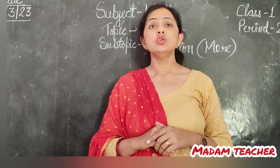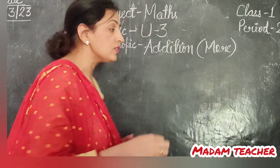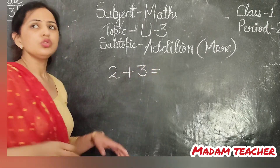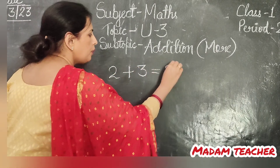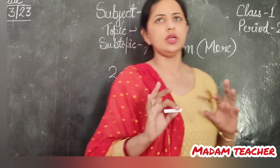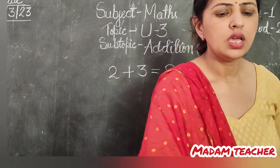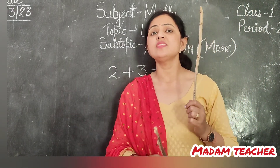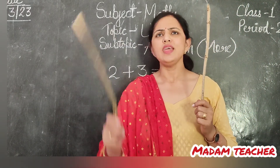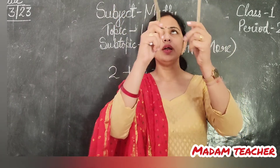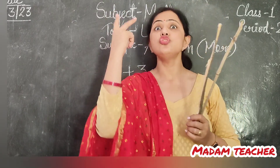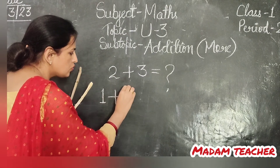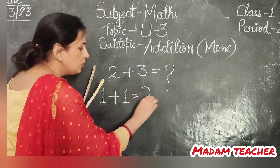My question was — Meera question tha — haap 2 mein 3 ko plus karenge toh kitna aega? Aap samajne ki koshish karo. See, the boy had 1 stick. Usne ek aur tree se pick ki — 1 aur 1 mila ke ho gaya 2. That means 1 plus 1 will become 2.